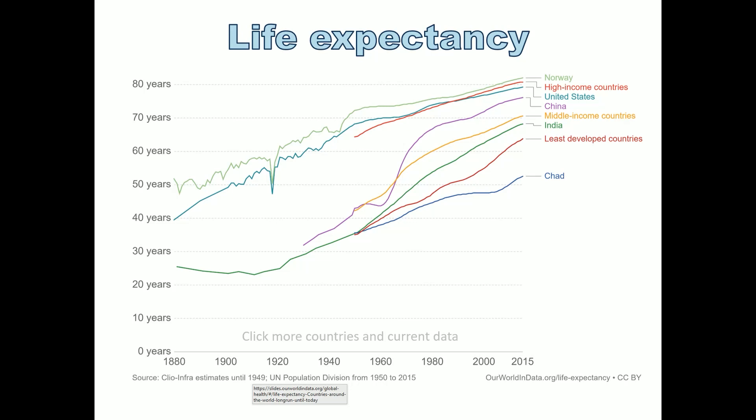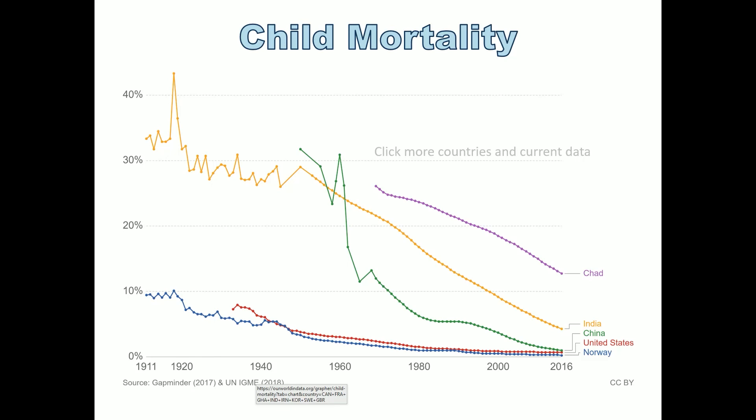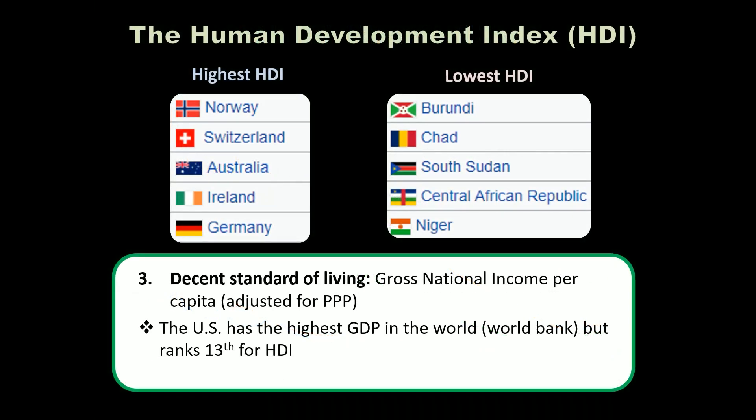There's also a chart of child mortality rates over the past 100 years showing they've been dropping worldwide, particularly in the most developed countries — but Chad again shows the least decrease. If infant mortality remains high, the average lifespan will necessarily be low. The third factor the HDI takes into account is standard of living, calculated based on gross national income per capita.